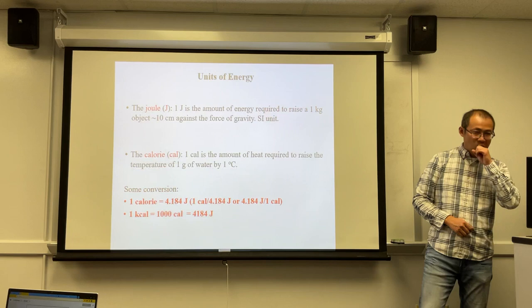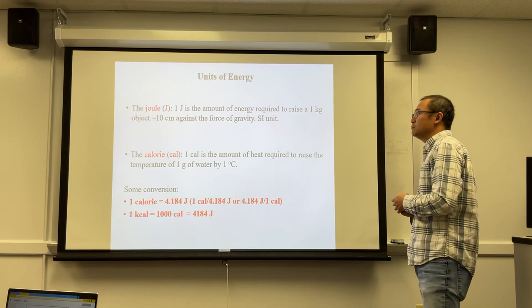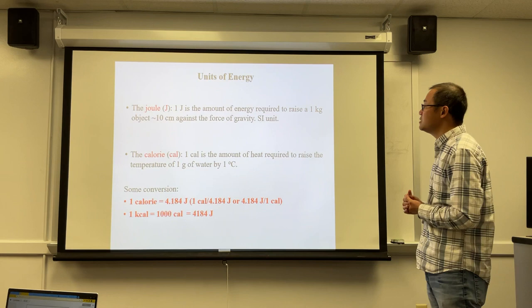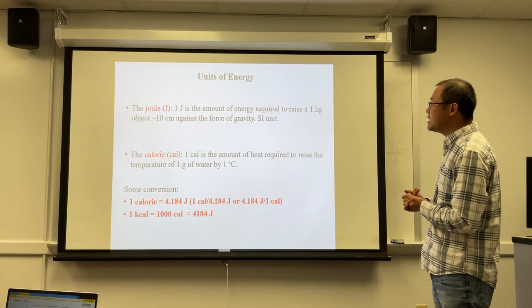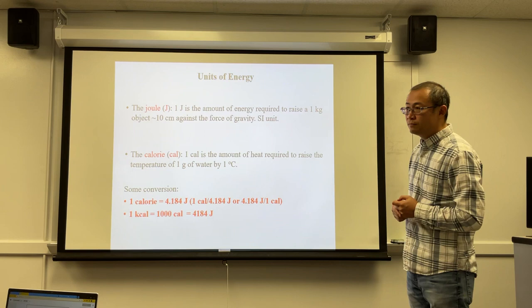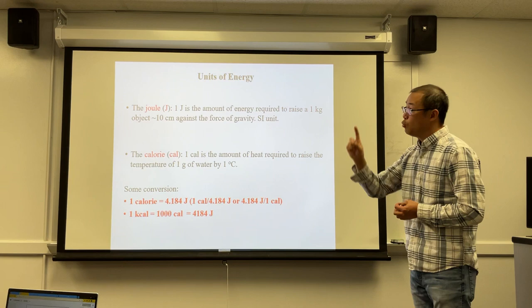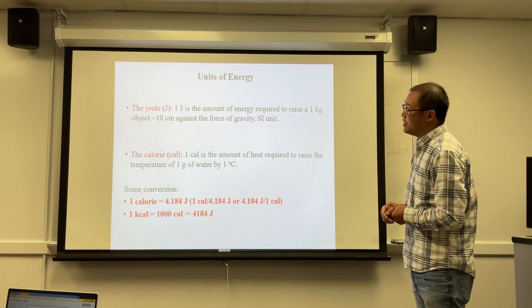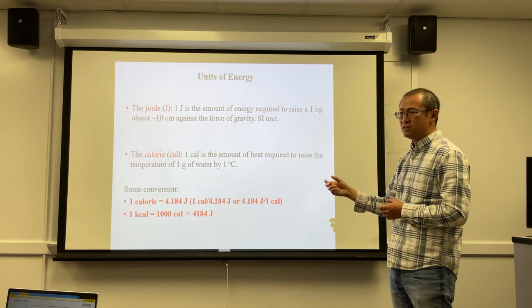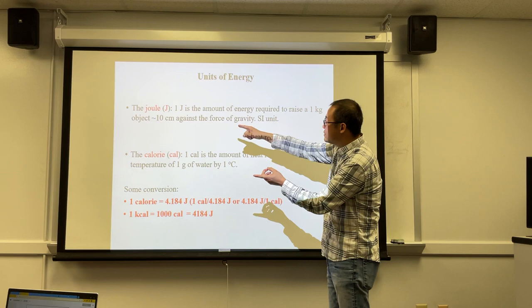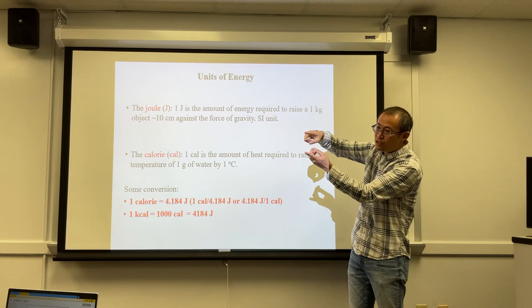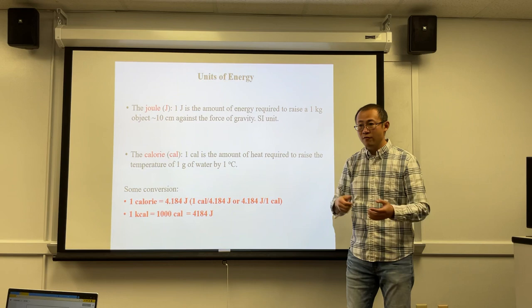The units of energy are listed here. The most commonly used is the Joule, abbreviated as capital J — the international SI unit of energy. One Joule is a very small amount of energy. For example, if you raise a one-kilogram object — about 2.2 pounds — ten centimeters against gravity, that amount of energy is one Joule, which is very small. That's the basic systematic unit for energy.